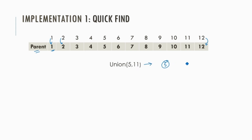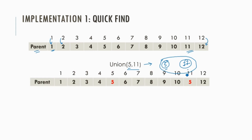Now let's perform a union operation. Sets 5 and 11 will be merged into a single set. The representative will be changed — it will be either 5 or 11. Let us consider 5 as the representative. So when we perform the union operation, we need to set 5 as the representative of both elements, changing the representative of 11 to 5.